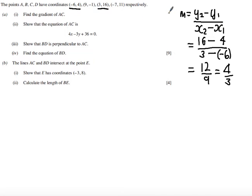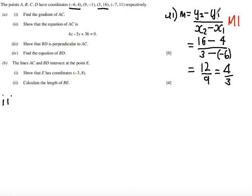So that is A part I. For marks, you are given a method mark for using the difference in Y over the difference in X — that can be for the formula or the numerical version — and then you get an accuracy mark for the correct answer of 4 thirds or equivalent.